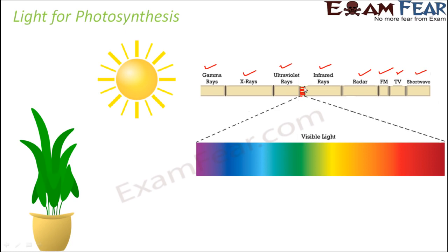Only the visible light portion of the electromagnetic spectrum is utilized for photosynthesis. If you pass visible light, which appears white, through a prism, you see that it gets divided into its constituent colors, and all these colors together form the white colored visible light. In the process of photosynthesis, mostly the blue and the red light are absorbed, because the pigments involved in photosynthesis have the ability to absorb light of those particular wavelengths.